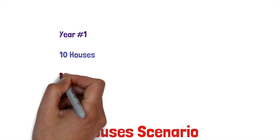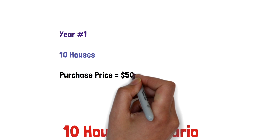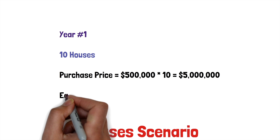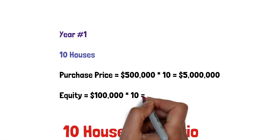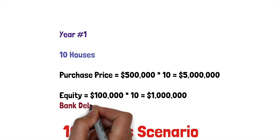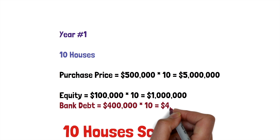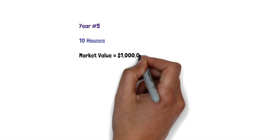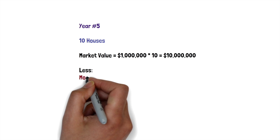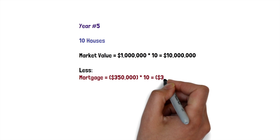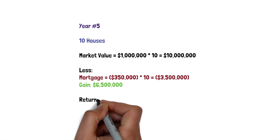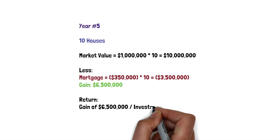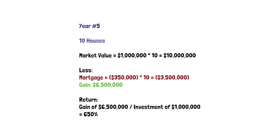Now let's look at the 10-house scenario. In year one, you purchase 10 houses at $500,000 each — that's $5,000,000 total. You fund this with an equity down payment of $100,000 per home times 10, totaling $1,000,000, and bank debt of $400,000 per home times 10, totaling $4,000,000. In year five, the 10 houses are worth $1,000,000 each — $10,000,000 total. You remove the mortgage of $350,000 per home times 10, which is $3,500,000. Taking $10,000,000 minus $3,500,000 gives you a gain of $6,500,000. Your return is $6,500,000 divided by your $1,000,000 investment — a return of 650%.